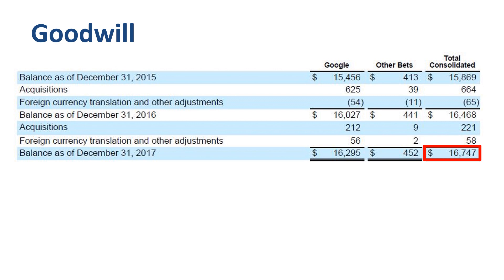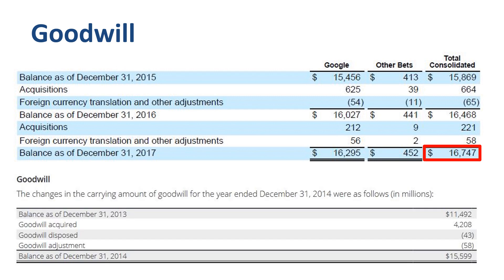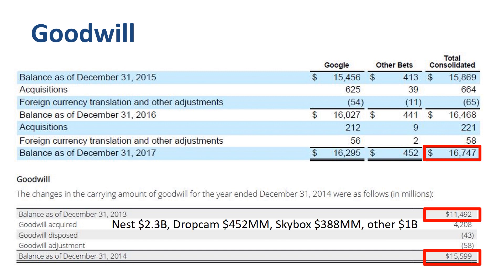To find the most significant increase in the goodwill balance, you have to go back to the 2014 annual report. In 2014, goodwill went up more than $4 billion — from $11.5 billion at the start of the year to $15.6 billion at the end of the year — $2.3 billion due to the Nest acquisition, $452 million for the Dropcam acquisition, $388 million for the Skybox acquisition, and $1 billion for other acquisitions that year. Going through the history of Alphabet Inc's acquisitions feels like a technological journey through time, and gives an indication of the breadth of the portfolio.